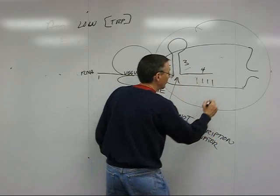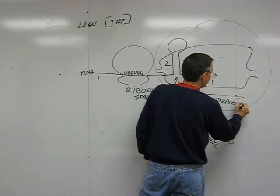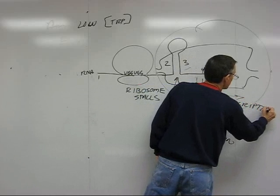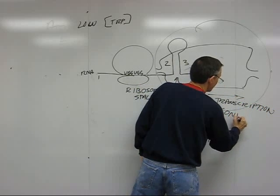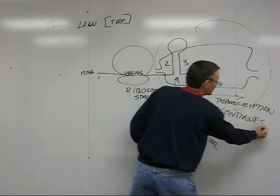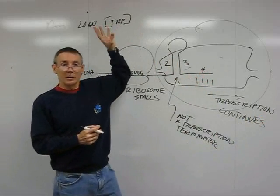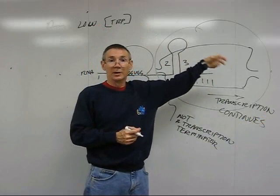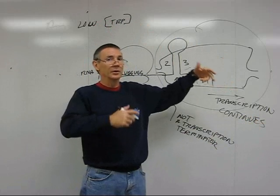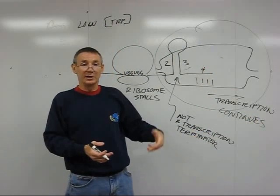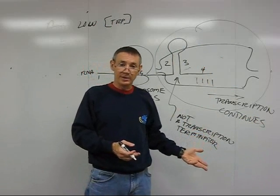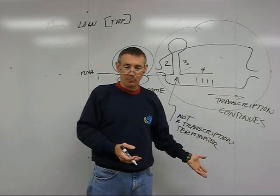So transcription continues. RNA polymerase transcribes the whole rest of the operon, making the polycystronic messenger. That then can be translated to give you the polypeptides E, D, C, B, and A. It makes the enzyme, you make more tryptophan.